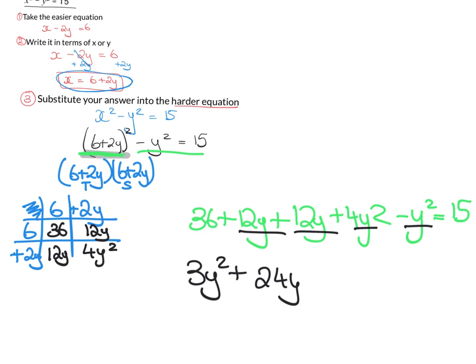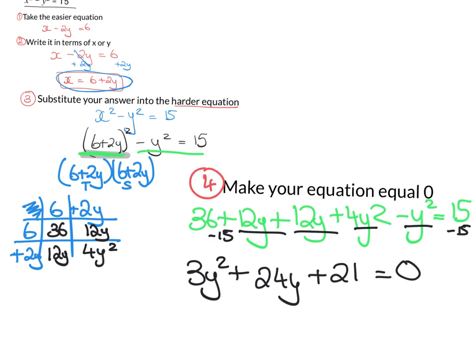So I always like to write the highest power first. So 3y squared plus 24y. And then I have, let's bring minus 15 across. So it'll be 36 minus 15, and I am getting 21. So plus 21 equals 0. So the next step, step 4, is always to make this equal 0. And you can see I just did that there.